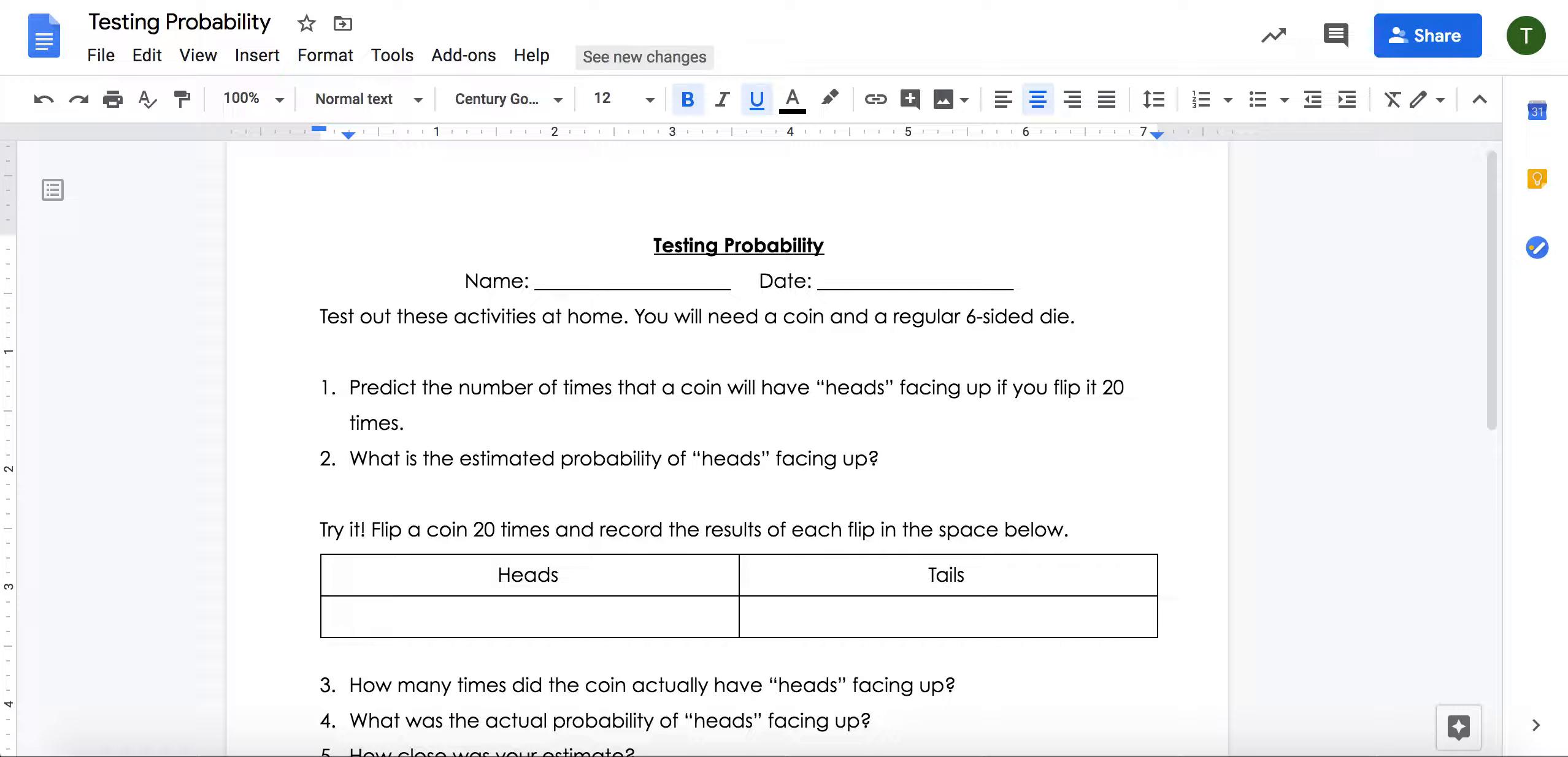Today you're going to have the opportunity to test some of the probability experiments we've discussed in class. To test these out at home, you will need a regular two-sided coin and a regular six-sided die. If you don't have these things, I'll show you how you can get around that by using two different websites that I provided in today's lesson.